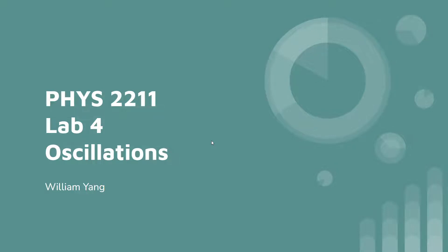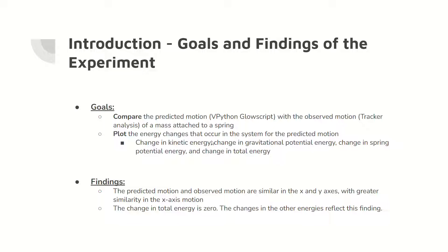Welcome to Physics 2211 Lab 4, Oscillations. The first goal is to compare the predicted motion with the observed motion of a mass on a spring. The second goal is to plot the change in energies of the mass-spring Earth system through time. The findings show similar positions between the predicted motion and observed motion over time, with some deviations.